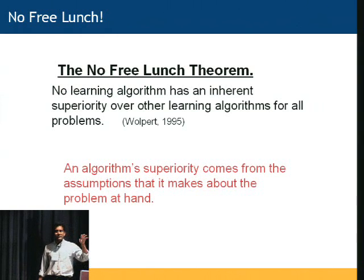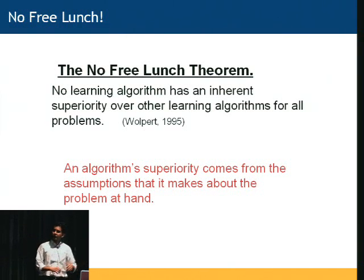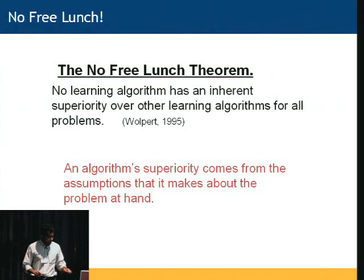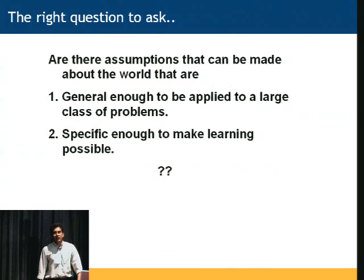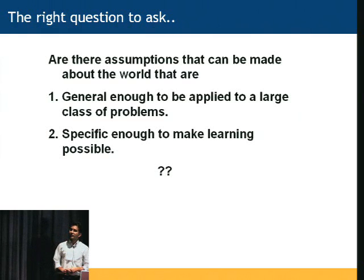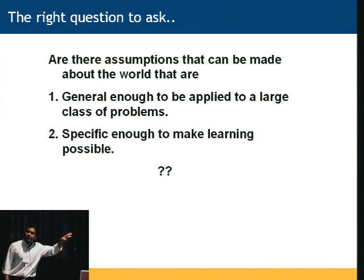What this theorem actually says is that it's not the algorithm that really matters — it's the assumptions that the algorithm makes about the problem it's going to solve. So we should not be asking about algorithms. We should be asking the right question: what are the right assumptions to make to solve all these problems? If cortex is solving all these problems — vision, audition, speech, everything — using the same set of principles, then there must be something that is common to all these problems.